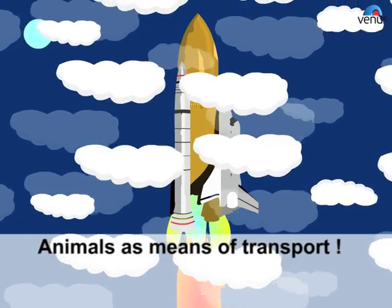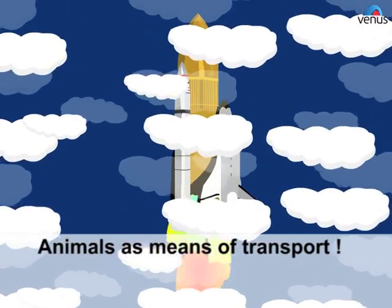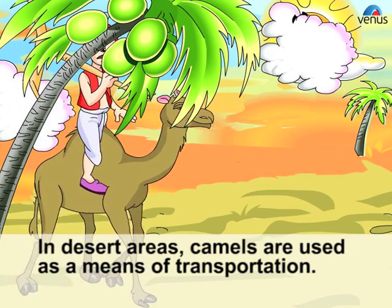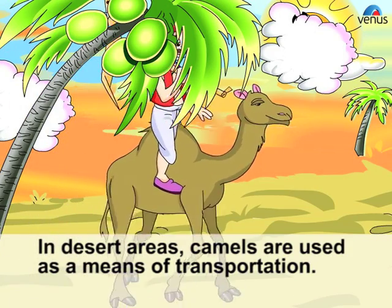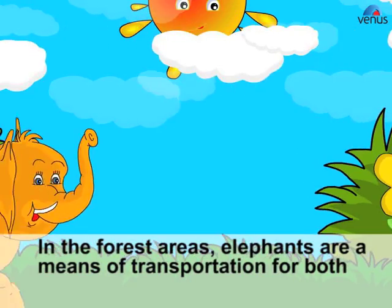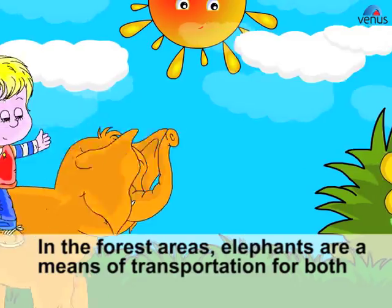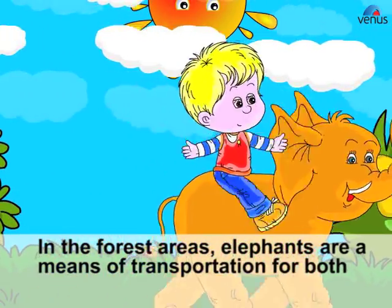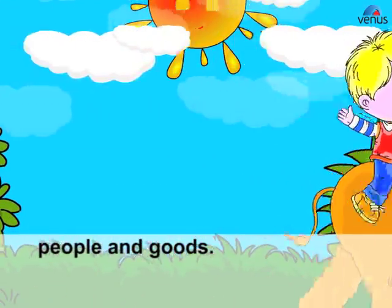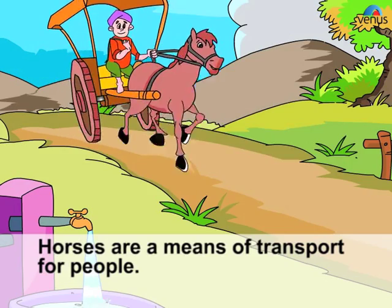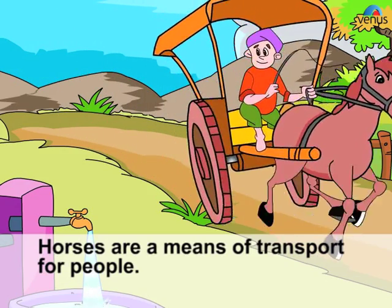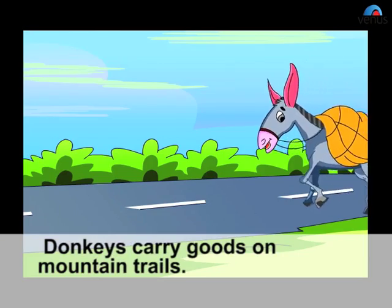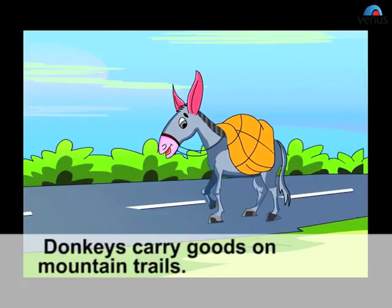Animals are also used as means of transport. In desert areas, camels are used for transportation. In forest areas, elephants are a means of transportation for both people and goods. Horses are a means of transport for people, and donkeys carry goods on mountain trails.